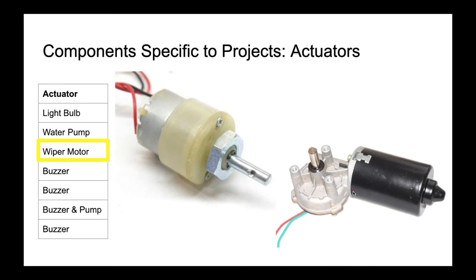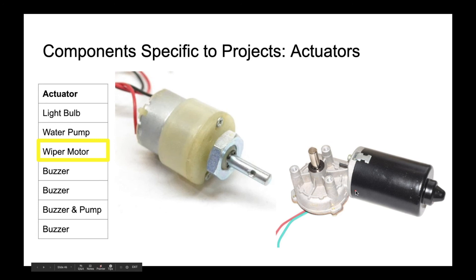Our next actuator is nothing but a motor. Motors are available in several different categories, but here I am explaining regarding a normal DC motor. A DC motor is something that works on a battery. Here you can see this is a DC motor with a gear mechanism on it — this is the actual motor and this part is the gear mechanism. And here what you can see is a wiper motor. In your car, a water wiping mechanism will be there, and that wiper is operated by this type of motor.